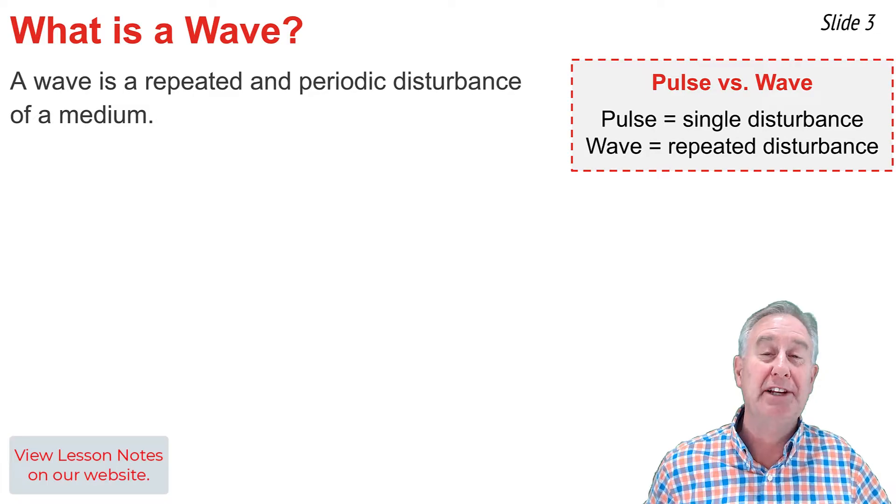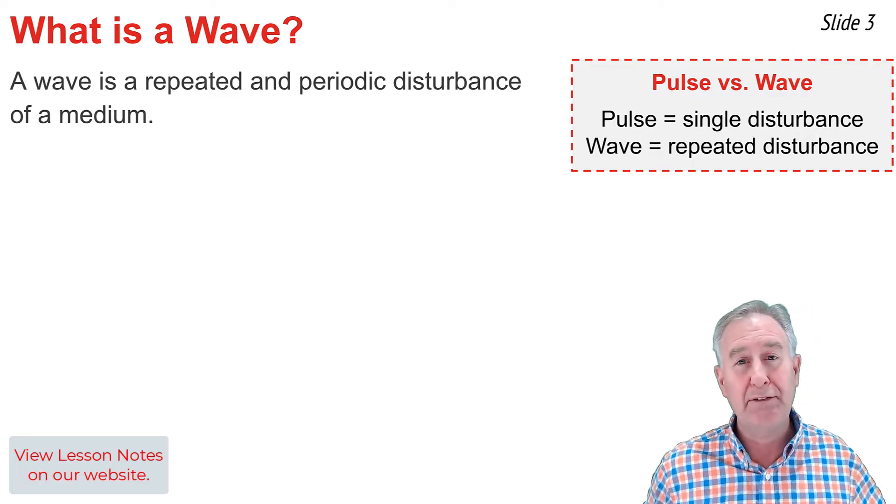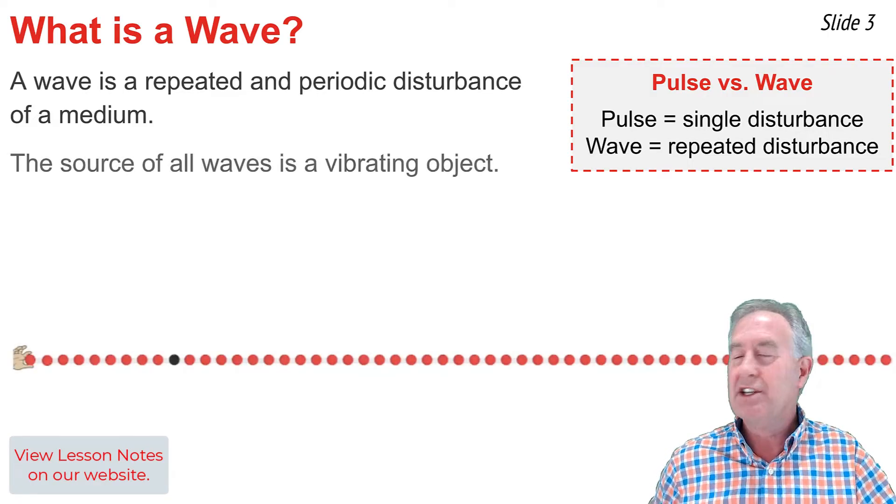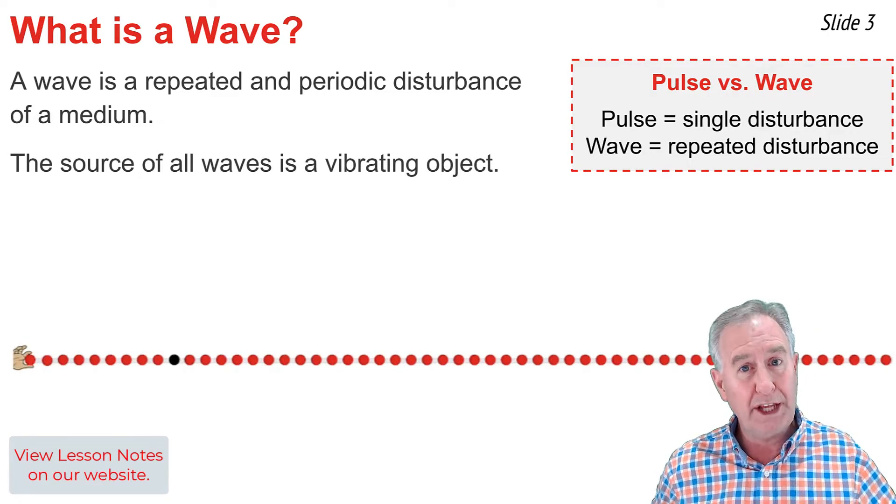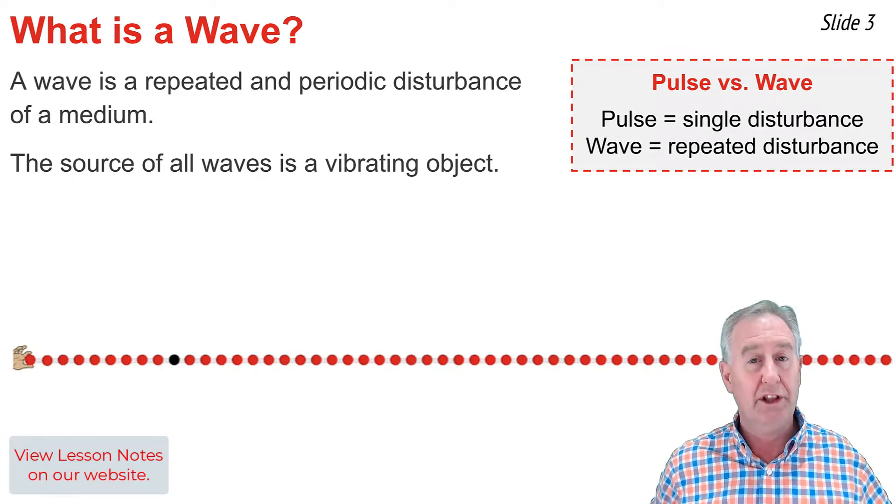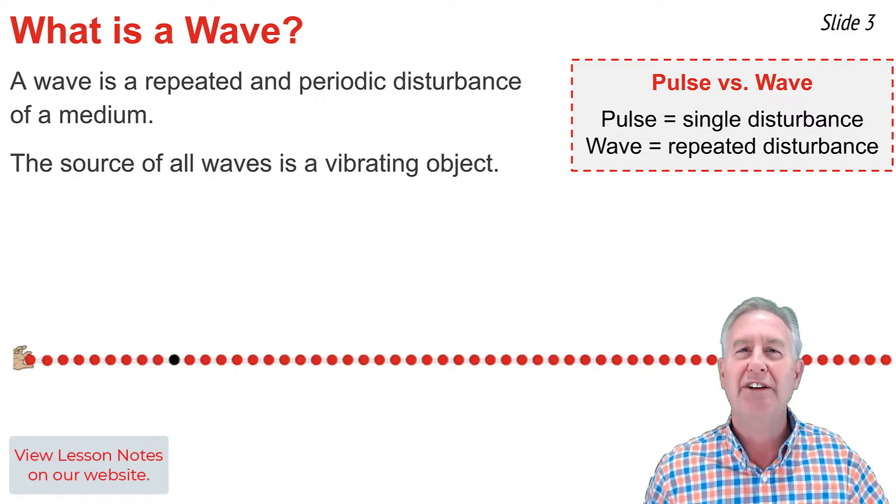A wave is typically defined as a repeated and periodic disturbance of the medium. In physics, we distinguish between a pulse and a wave, where a pulse is a single disturbance and a wave is a repeated and ongoing disturbance. This is a model of a slinky, where each coil of the slinky is being represented by a rigid sphere. Currently, those coils are at rest. This is the rest position of the slinky.